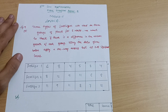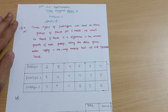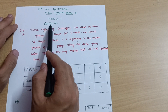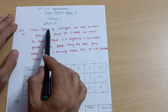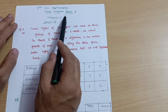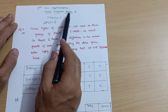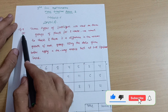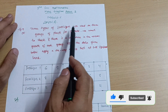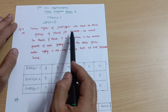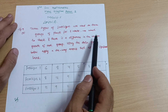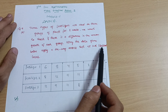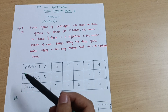Hello everyone and welcome back to my channel. We are discussing the model question paper for the mathematics subject for CSC stream students. So far we have discussed the problem on ANOVA. Today I am with another problem from model question paper set two. In the previous video we discussed model question paper one, question nine A. In this video we will discuss model question paper two, question nine A. Three types of fertilizers are used on three groups of plants for five weeks. We want to check if there is a difference in the mean growth of each group using the data given below. Apply a one-way ANOVA test at five percent significance level.